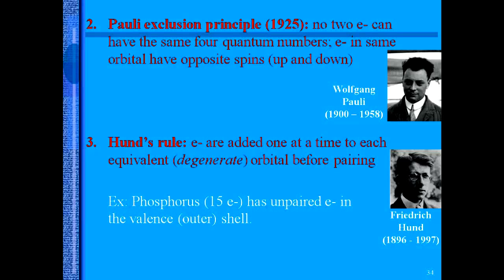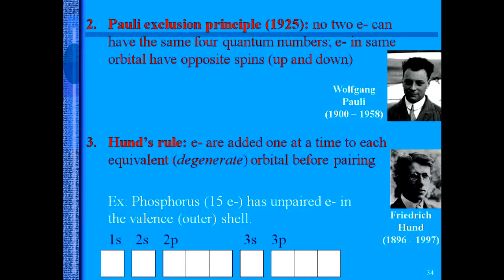So for example, with phosphorus it has 15 electrons. It will have unpaired electrons in the very outer orbital. So here you'll see we have phosphorus written out: 1s, 2s, 2p, 3s, 3p.